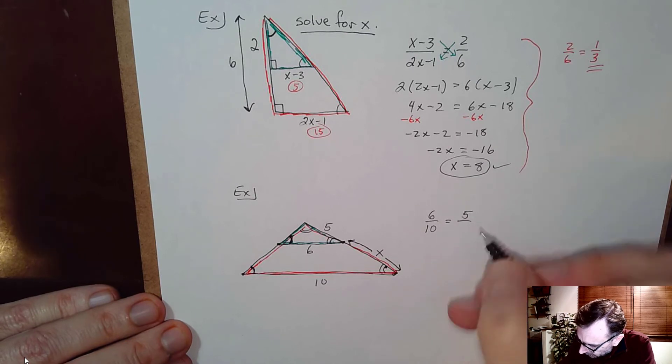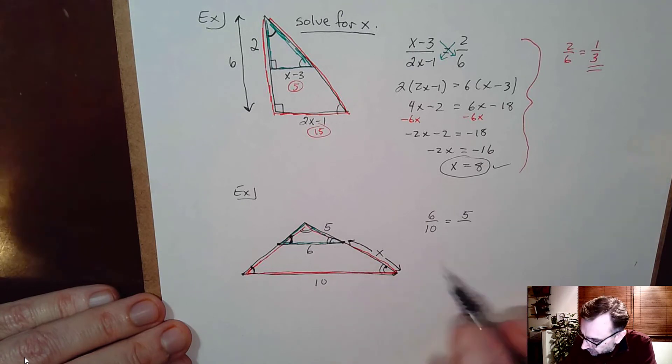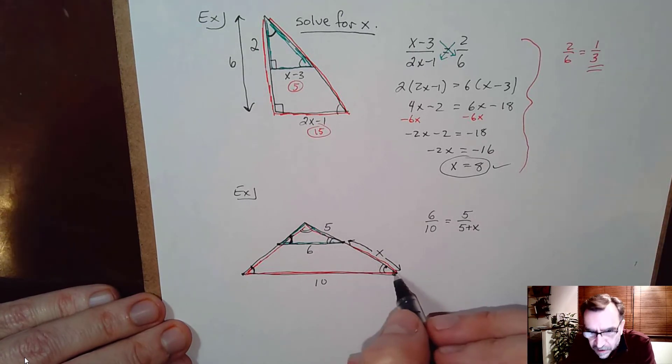5 is to. Now the length of this side of the big triangle. The red one is actually 5 plus X. So that's a little tricky. This is just part of the side, the X.